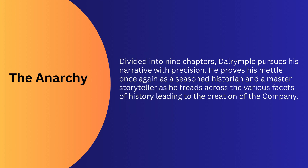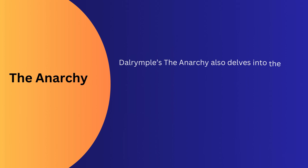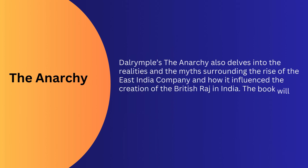One can imagine the level of planning and insight the company already had to impose its will and command over India. Divided into nine chapters, Dalrymple pursues his narrative with precision. He proves his mettle once again as a seasoned historian and master storyteller as he treads across the various facets leading to the creation of the company. Dalrymple begins the first chapter, titled '1599', in an unorthodox yet interesting way. He writes: 'On 24 September 1599, when William Shakespeare was pondering a draft of Hamlet in his house downriver from the Globe in Southwark, a mile to the north — barely 20 minutes' walk across the Thames — a motley group of Londoners was gathering in a rumbling half-timbered building lit by many mullioned Tudor windows.'